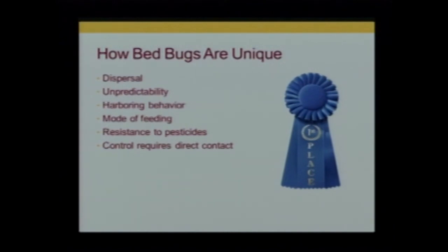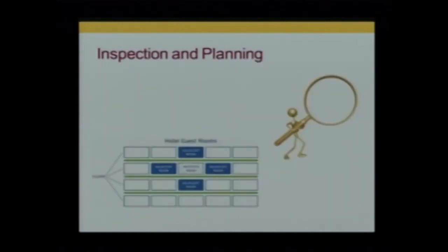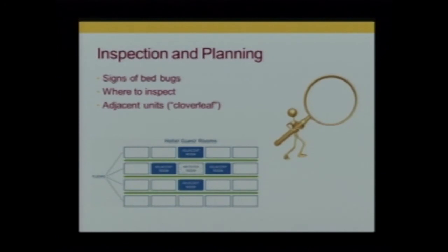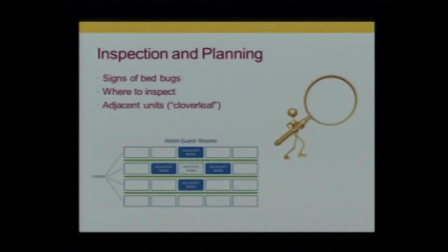We talked about resistance to pesticides — the ability of populations to become more tolerant or less capable of being killed by insecticides over time. Insects have to come into contact with insecticides: if it's a residual, they typically walk on it; if it's a fumigant, they inhale it. There's no bait, so ingestion of a toxicant is not an option today. We have to plan and schedule so that surrounding rooms — adjacent rooms in a cloverleaf pattern for a hotel — are inspected side to side and above and below. About 20% of the time, we find bed bugs in an adjacent room to an infested room.